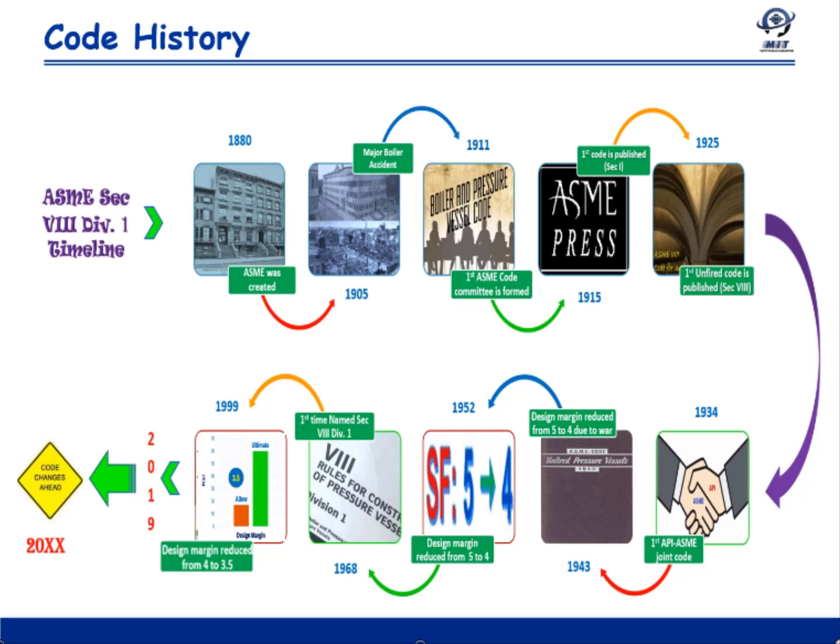A very serious incident happened in the year 1905 in the Grover shoe factory in Brockton, Massachusetts. It killed around 58 people and more than 100 were injured.